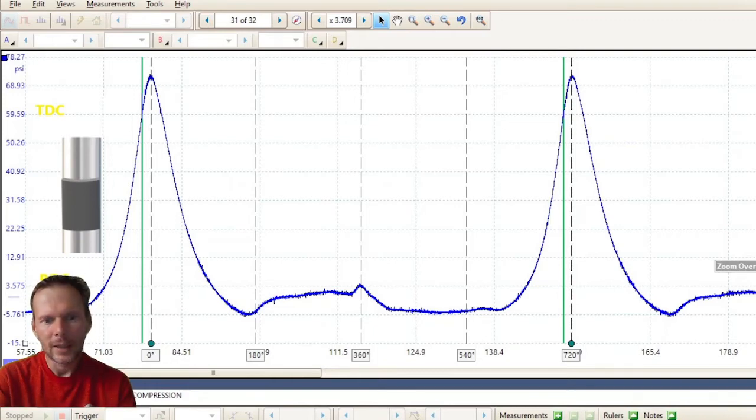So the 180 degree mark would be bottom dead center. The 540 degree partition line with the dots is bottom dead center. So top dead center in this is going to be zero degrees, 360 degrees, and then 720 degrees.